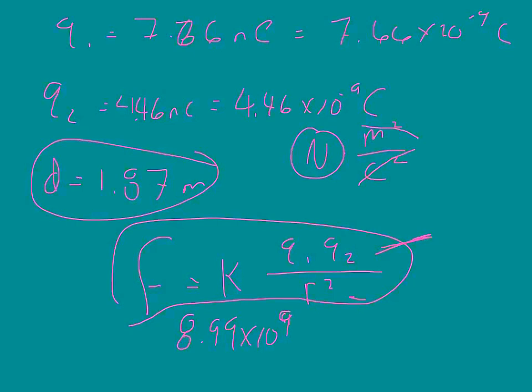So we've got 8.99 times 10 to the 9th, times 7.66 times 10 to the negative 9th, times 4.46 times 10 to the negative 9th, divided by 1.86 squared.